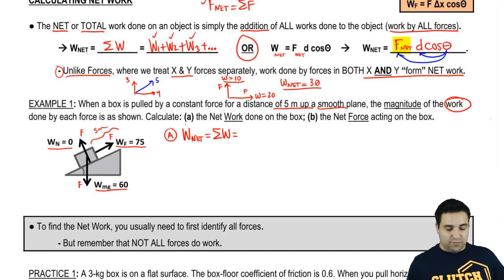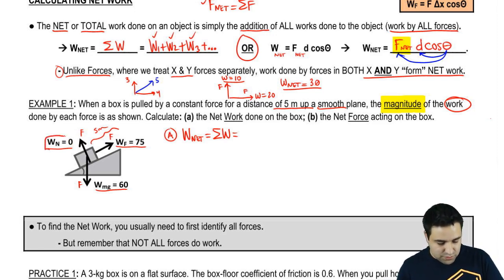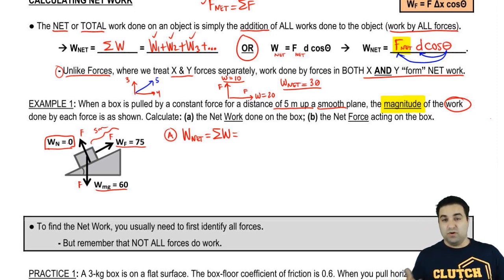The only thing you have to be careful here is that I'm giving you the magnitude, meaning I'm giving you these works as positives, and some of them might be negative. And here you have to remember, when is a work positive, when does a force do positive work, and when does a force do negative work? Positive work is in the direction of motion, and negative work is against motion. This guy here is 0 because it's perpendicular to motion, and the work done by normal is always 0 because it's always perpendicular to motion.